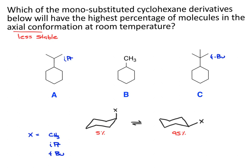As the group goes from methyl to isopropyl, the group gets bigger. So even though the methyl hates being axial, the isopropyl hates being axial even more. Maybe the ratio changes to only 1% of the molecules in the axial conformation and 99% in the equatorial. Then if you jump to the tert-butyl group, that becomes even larger and the molecules hate even more to be axial — maybe 0.1% axial and 99.9% equatorial.